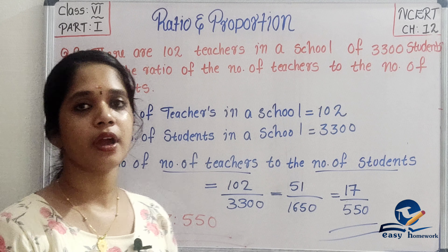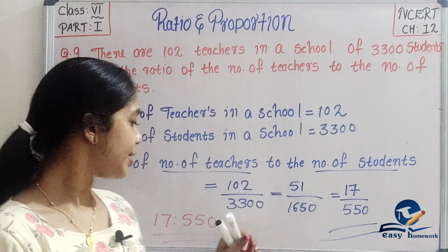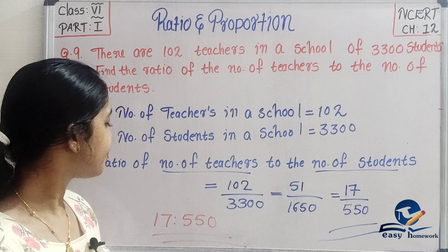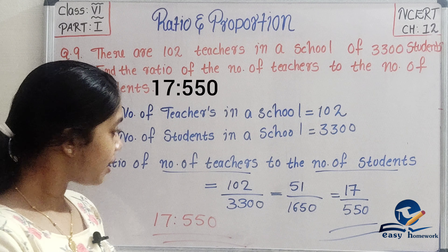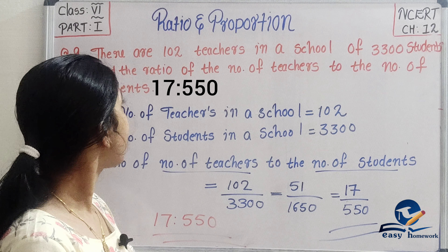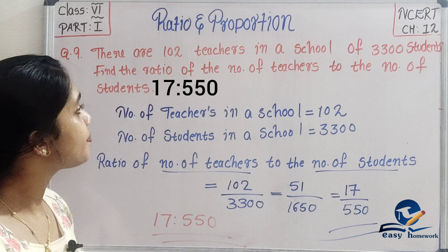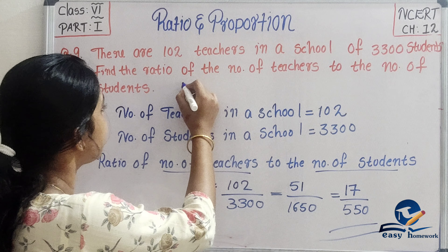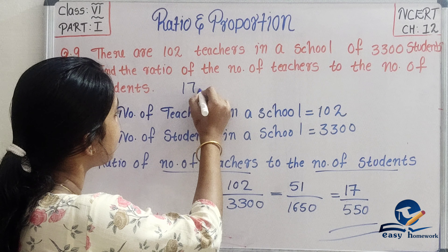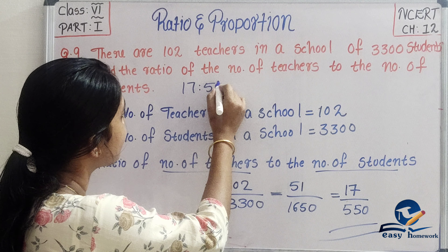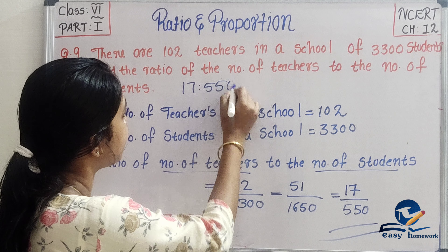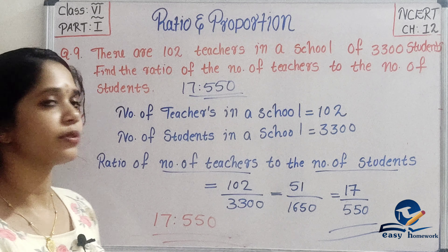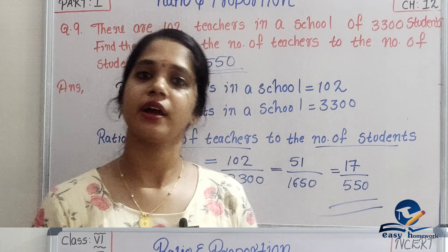Here we have 17 is to 550. That is the ratio of teachers to students: 17 is to 550.